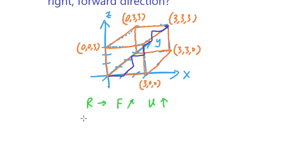So you can see that to go from (0,0,0) to (3,3,3), you can basically go right, right, right, forward, forward, forward, up, up, up.